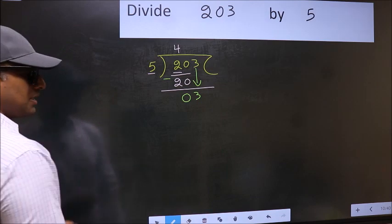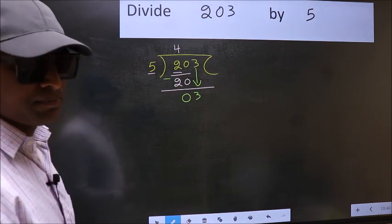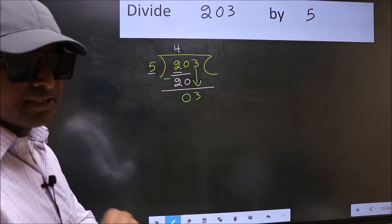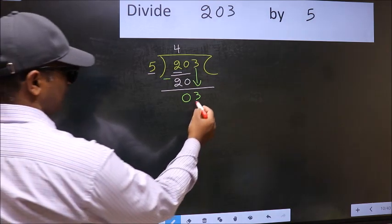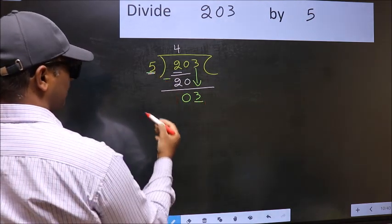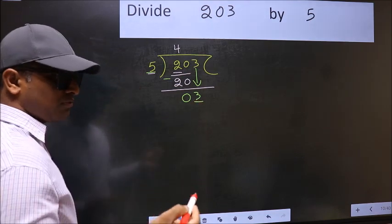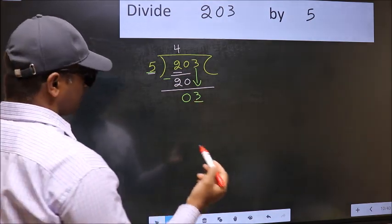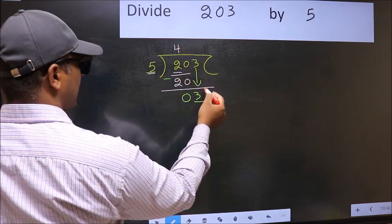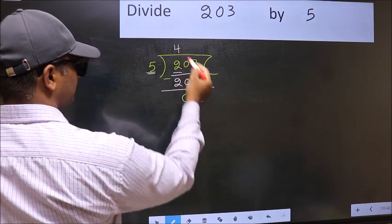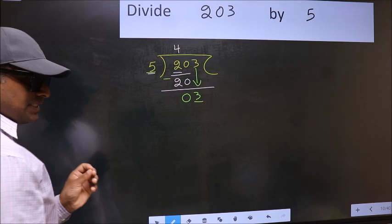After this step, the mistake happens. And the mistake is this: here we have 3 and here 5. 3 is smaller than 5. So what many do is they directly put a dot and take 0, which is wrong.